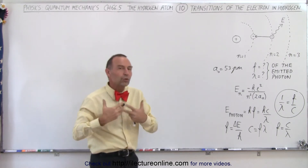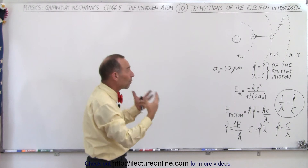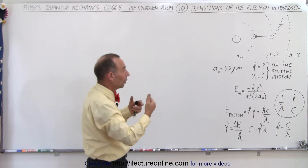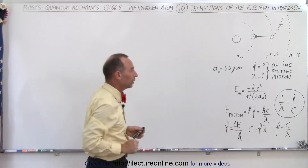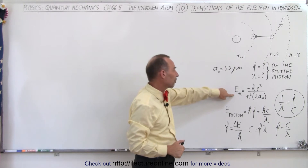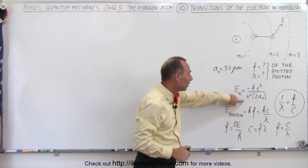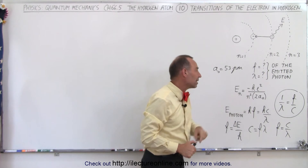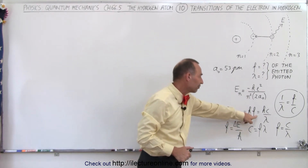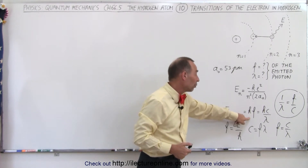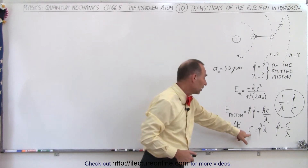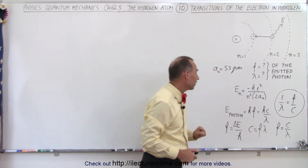What we're going to do here is come up with a general equation that describes the photon either by frequency or wavelength as the electron jumps from one level to another. We're going to use the equation that the energy of an electron is equal to 1 over n squared times minus k e squared over twice the Bohr radius. The energy of a photon is equal to h times the frequency — h being Planck's constant — which can also be written as hc over lambda, because the speed of light equals frequency times wavelength.